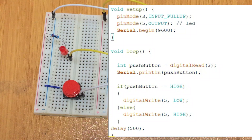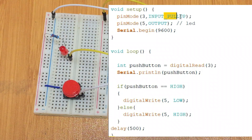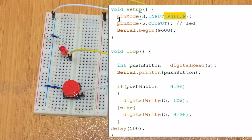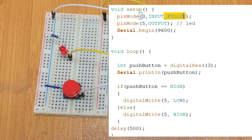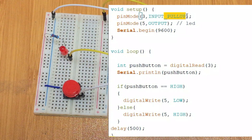To activate the internal pull-up resistors, we only have to change one simple part of the code. Initially we configured pin 3 as an input, and now we include the keyword INPUT_PULLUP — that means we are activating the internal pull-up resistors of the Arduino. The rest of the code remains the same.